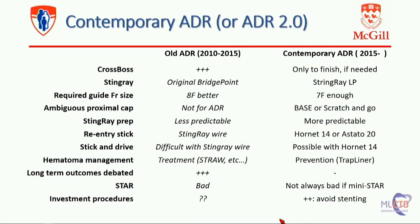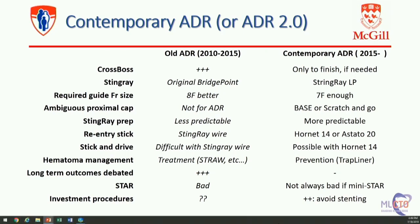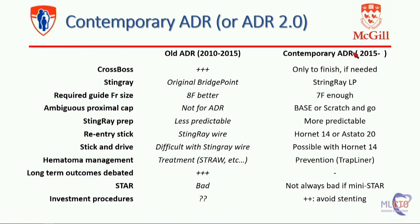What is the comparison between contemporary ADR 2.0 versus old ADR? Historically up to 2015, CrossBoss was used a lot — now it's more to finish if needed. We had the original Bridgepoint; now we have Stingray LP. Eight French was preferred then; now 7 French is largely enough for most procedures because the Stingray LP is smaller. Ambiguous proximal cap was not suitable for ADR; now we have BASE and scratch-and-go. Stingray prep was less predictable — how many times we had Stingray preps and wouldn't see the wings of the balloon? Now it doesn't happen; we've understood how to do it.